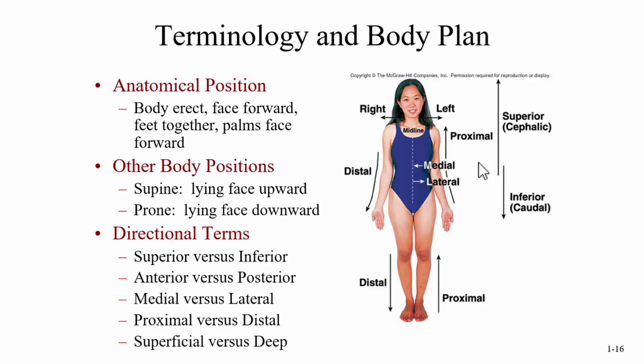We can combine these terms to be more accurate. For instance, we know the nose is anterior compared to the ear, and medial compared to the ear. So we can say the nose is anteromedial to the ear. And the ear is posterolateral compared to the nose — this is just a more detailed way of describing something.